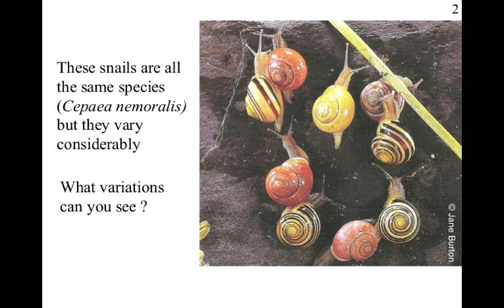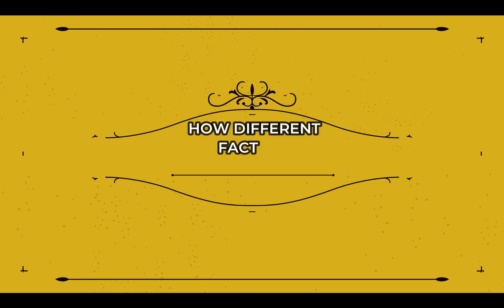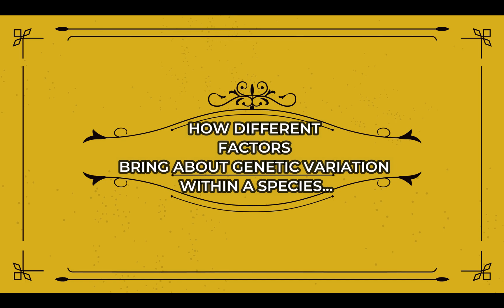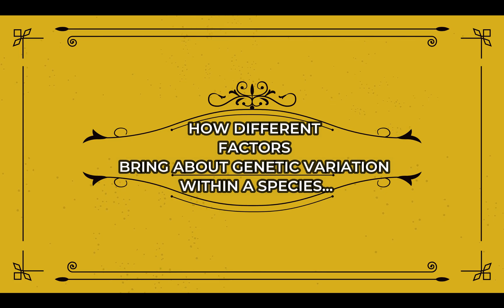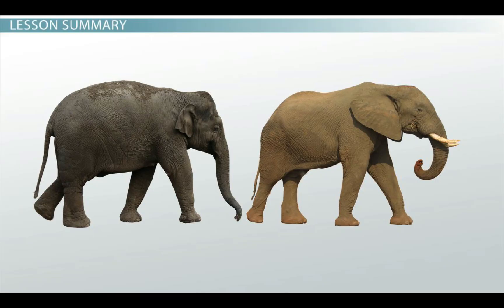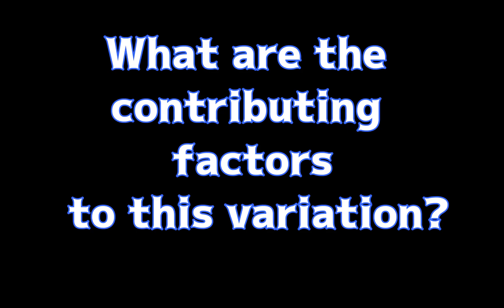So, in this video, we will be describing how different factors bring about genetic variation within a species. We have discovered that the individual organisms making up any one species are not identical. So, how do the differences in appearance occur? What are the contributing factors to this variation?